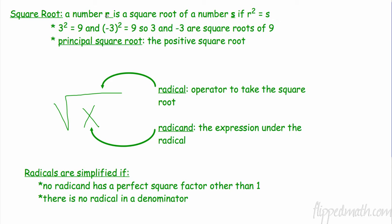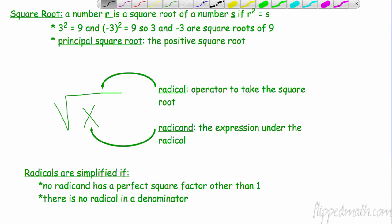A number r is a square root of a number s if r squared equals s. For example, 3 squared equals 9, and negative 3 squared — because negative times a negative is a positive — also equals 9. So 3 and negative 3 are both square roots of 9. When simplifying, we typically refer to the principal square root, which is the positive square root.